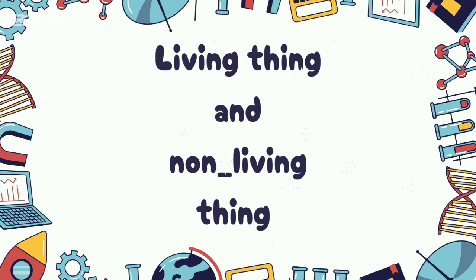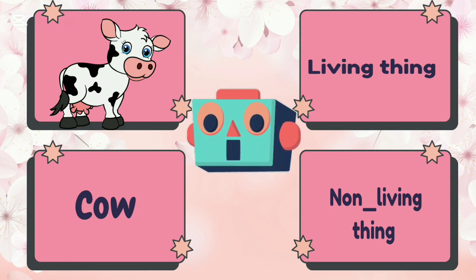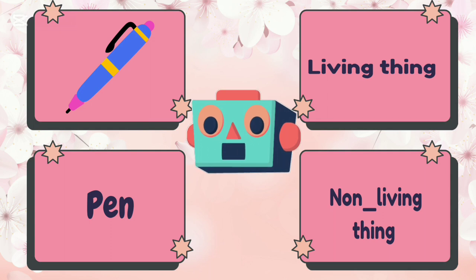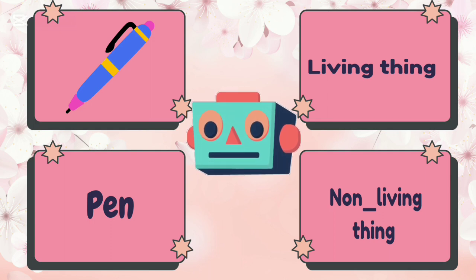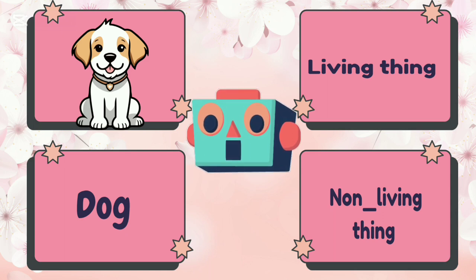Living things and non-living things. Cow is living thing or non-living thing? Cow is living thing. Plant is living thing or non-living thing? Plant is non-living thing. Dog is living thing or non-living thing? Dog is living thing.